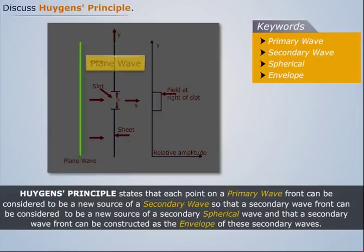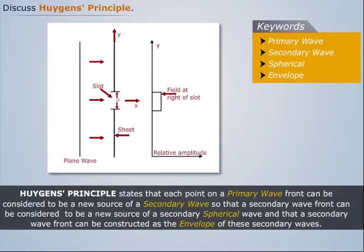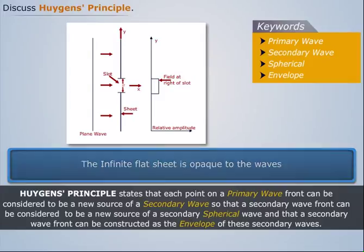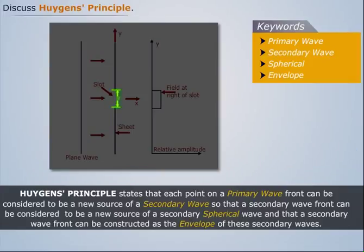Let an infinite plane electromagnetic wave be incident on an infinite flat sheet that is opaque to the waves. The sheet has a slot of width A and of infinite length in the direction normal to the page.